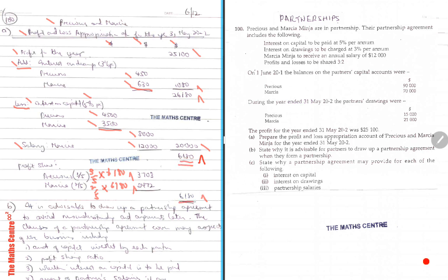And these add up to $6,180 — can you see it ties back? The $6,180 splits two ways, and that's your profit and loss appropriation account.